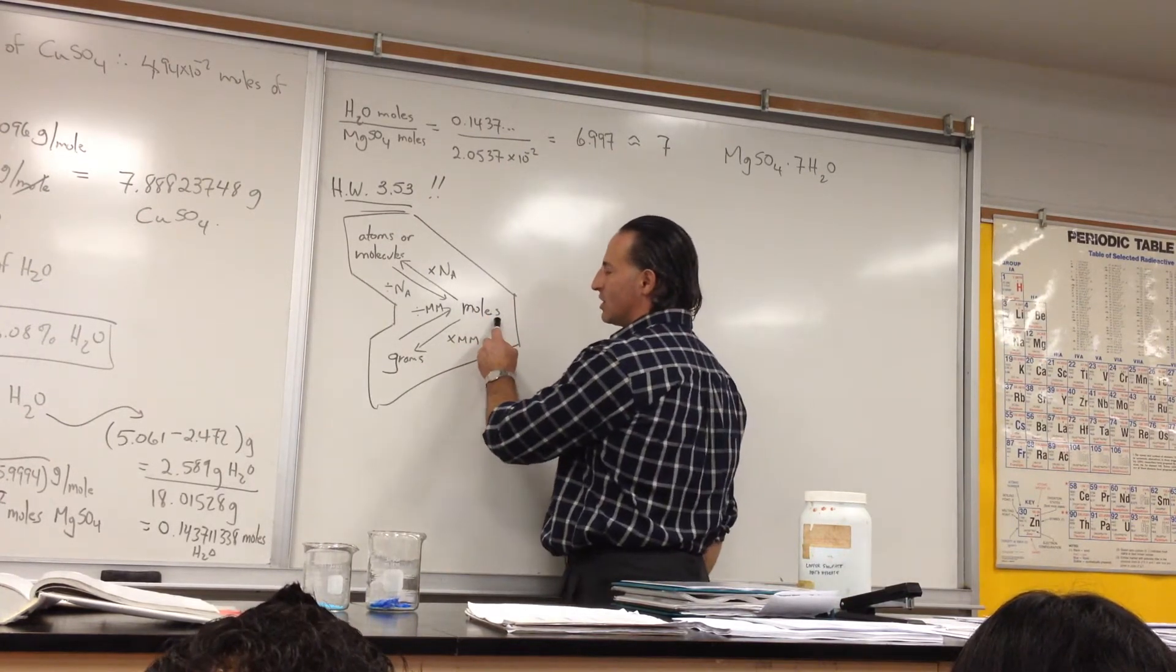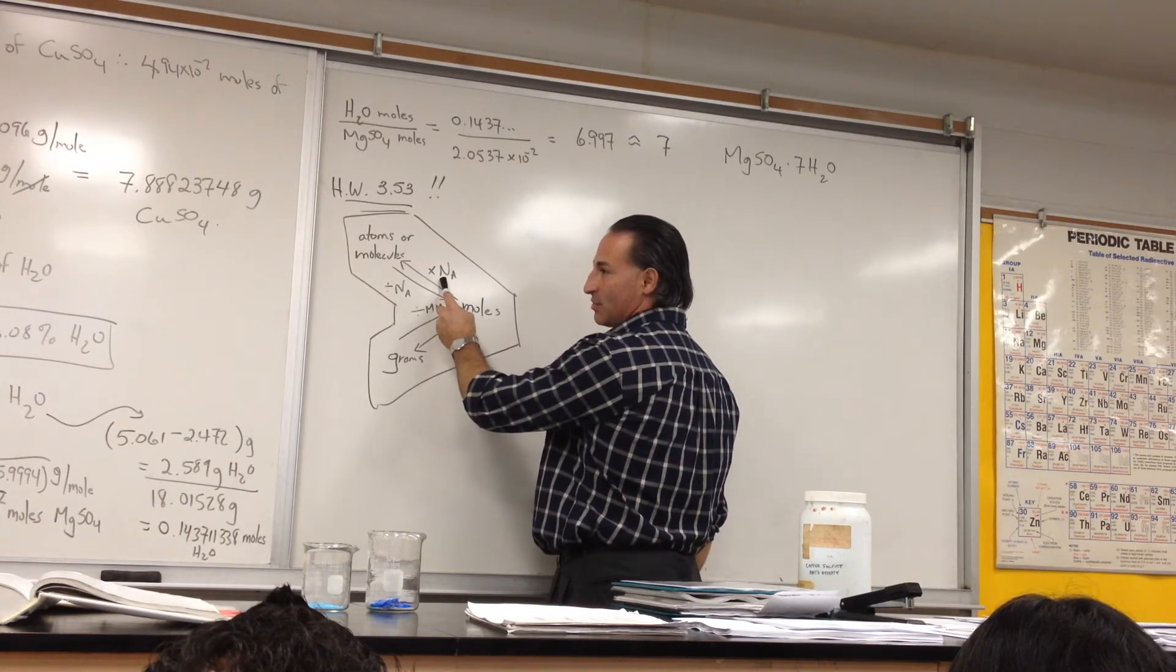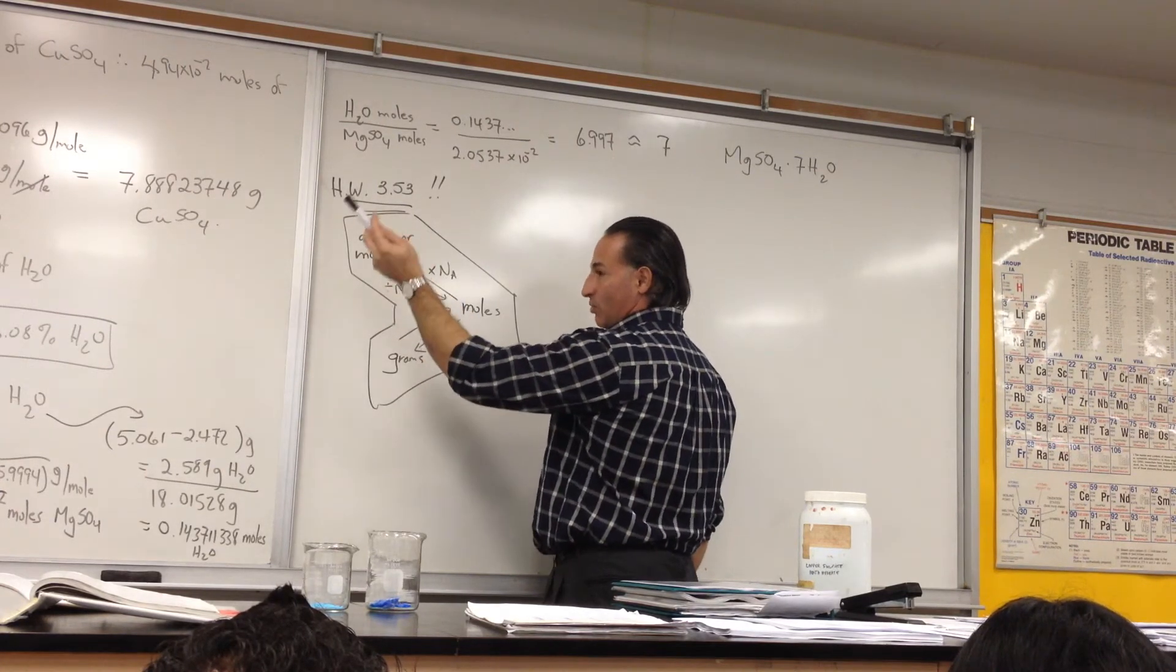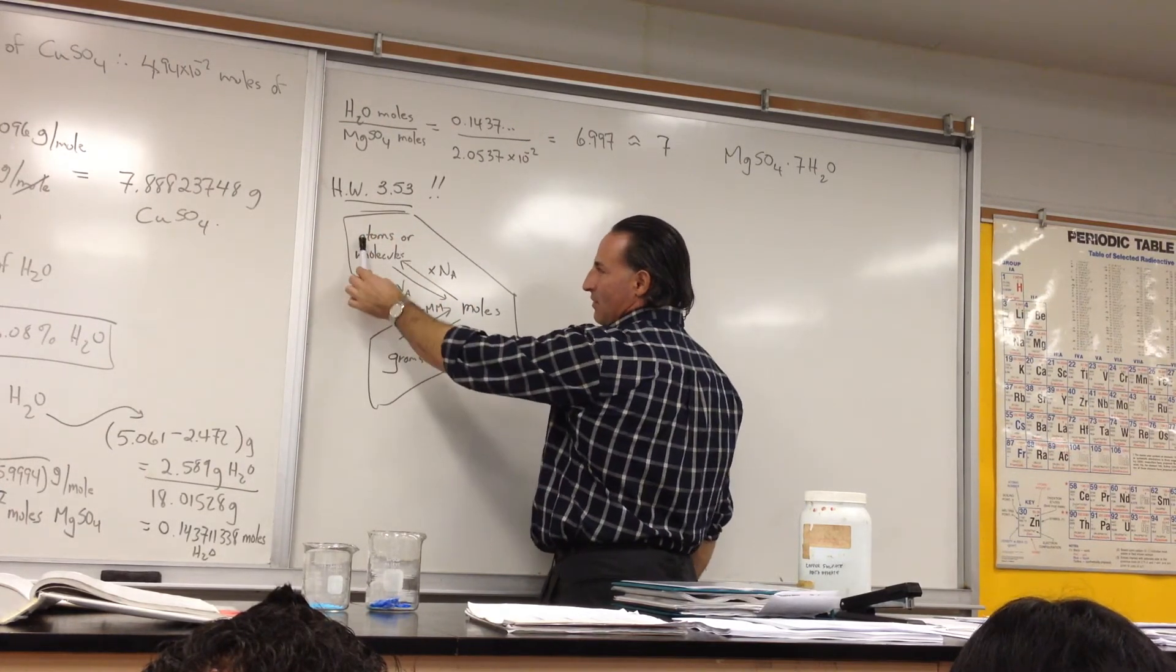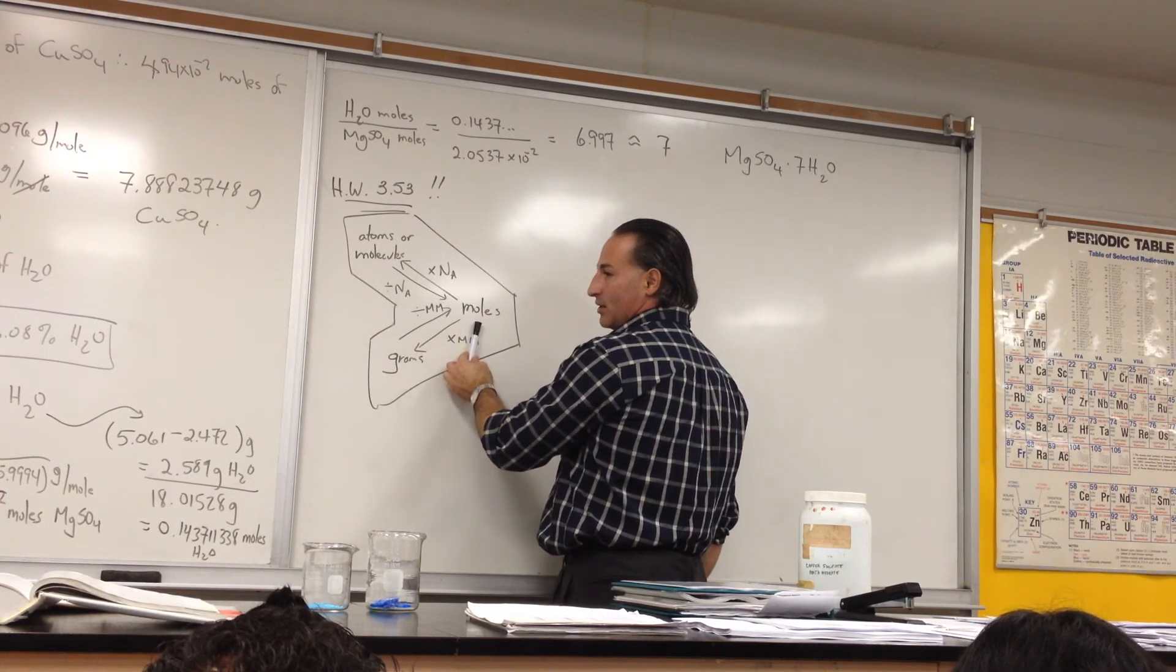Likewise, if you have the moles of the substance, and you multiply by Avogadro's number, which is 6.02 times 10 to the 23, you'll get the number of atoms or molecules or whatever. And if you have the number of atoms or molecules, and you divide by Avogadro's number, you'll get the number of moles.